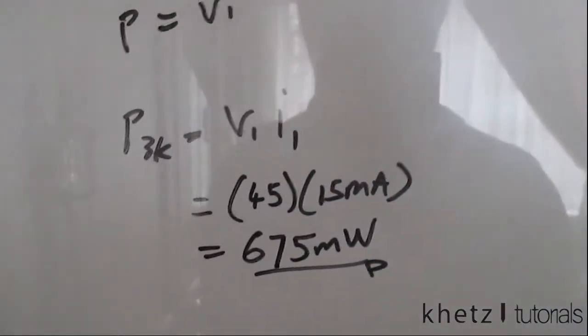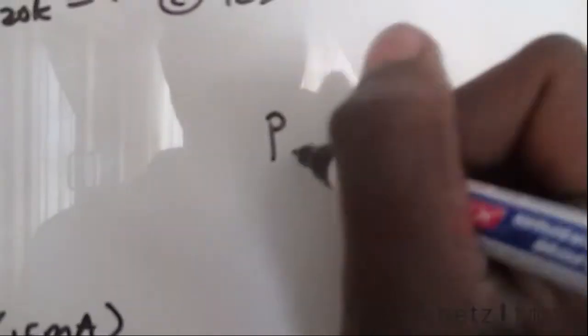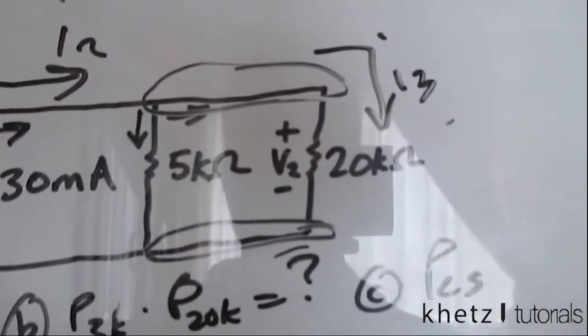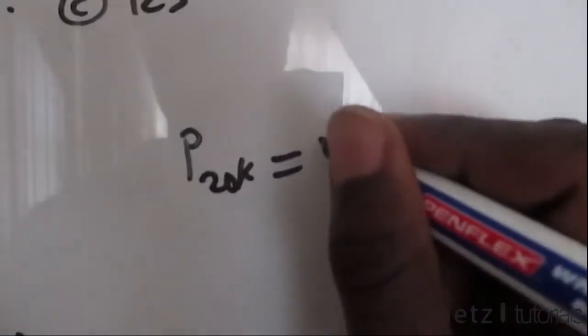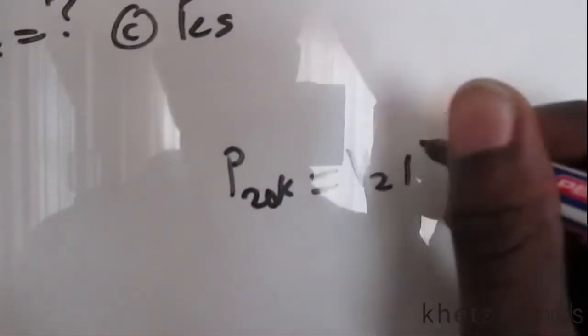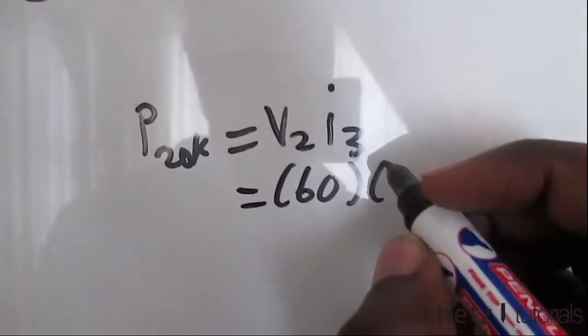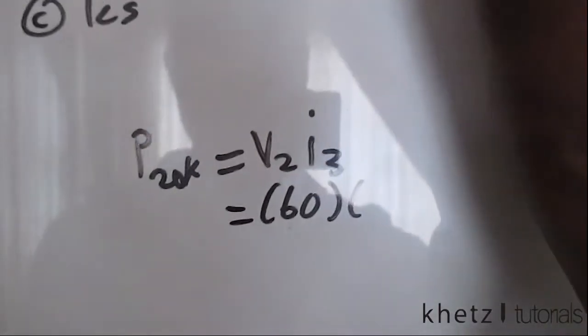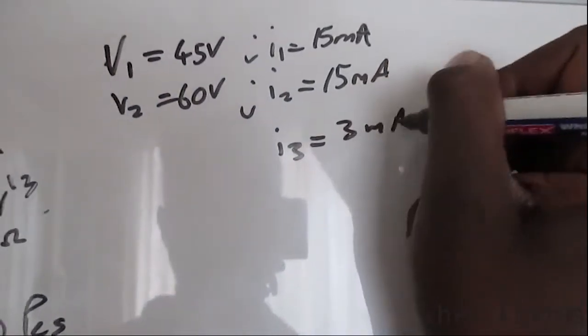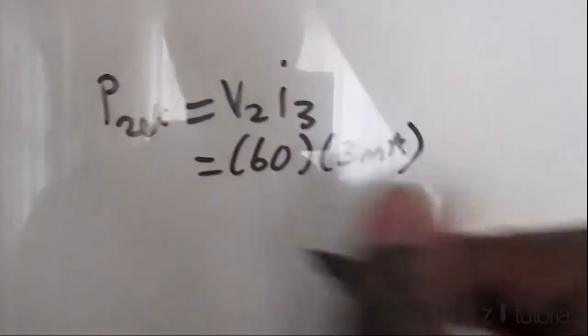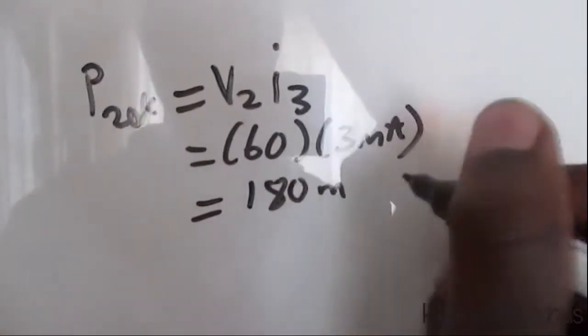Moving on to the power dissipated in the 20k resistor: P = V2 × i3. V2 is 60 volts and i3 is 3 milliamperes, so the power dissipated in the 20k resistor is 180 milliwatts.